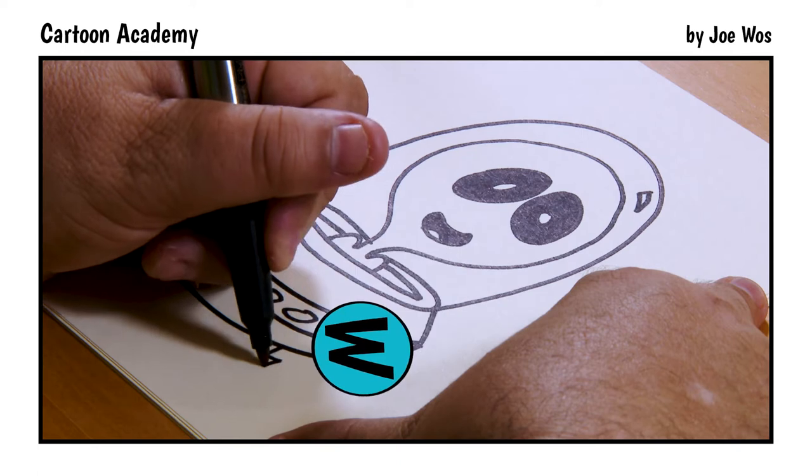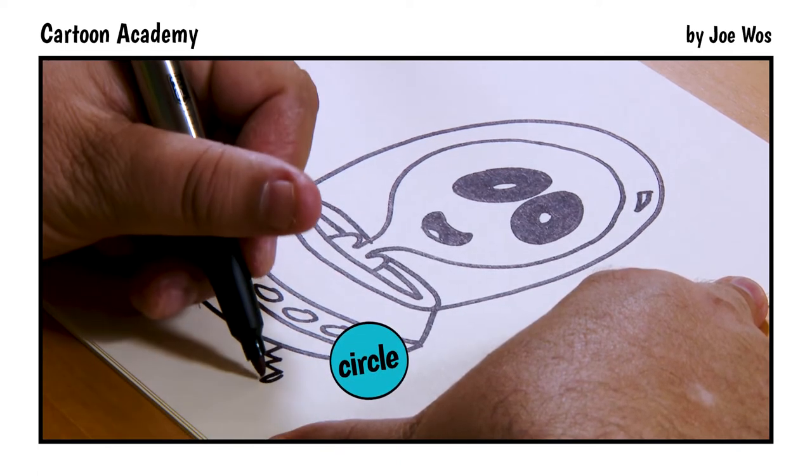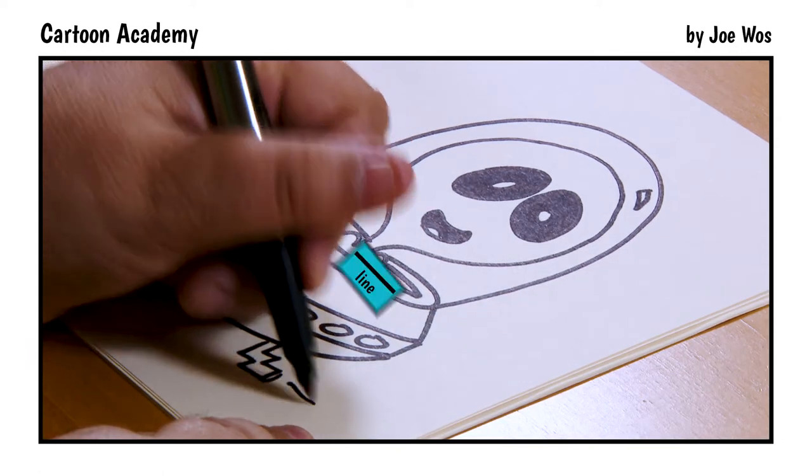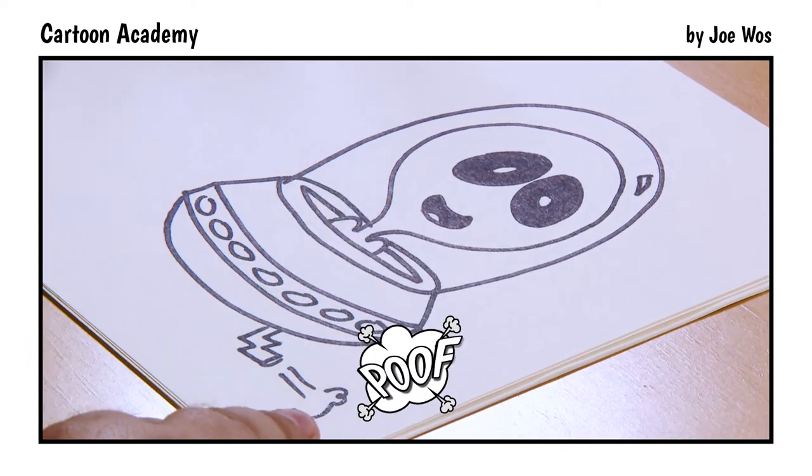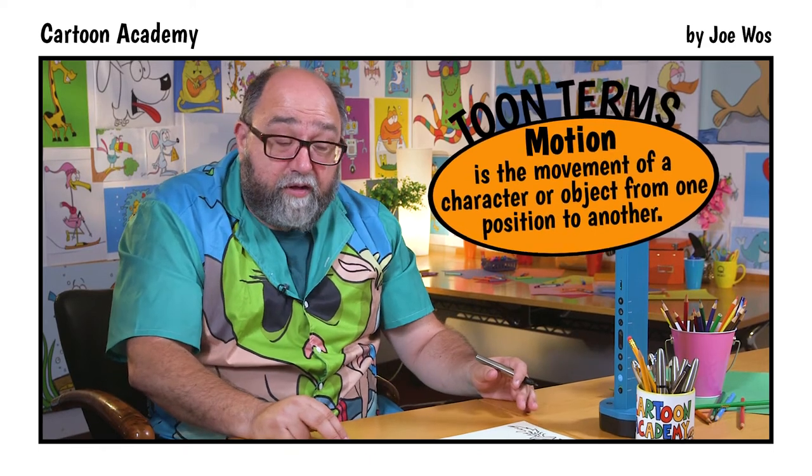Let's add an exhaust pipe right here. Letter W, circle, letter W, and two lines. A little puff here. It's one of the ways we're able to show motion or movement in static or still cartoon drawings. Drawings themselves aren't moving, but the way we can show the illusion of movement is by adding little lines.